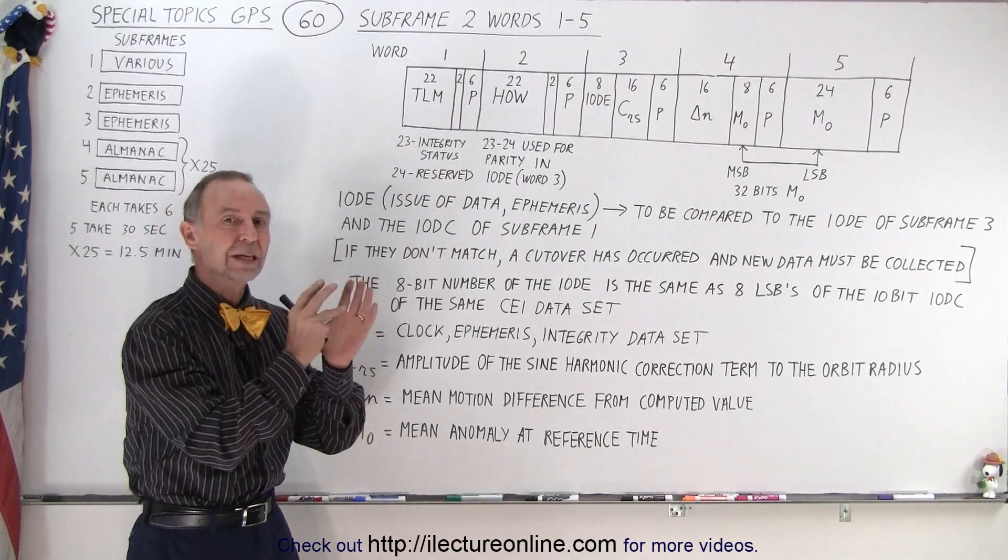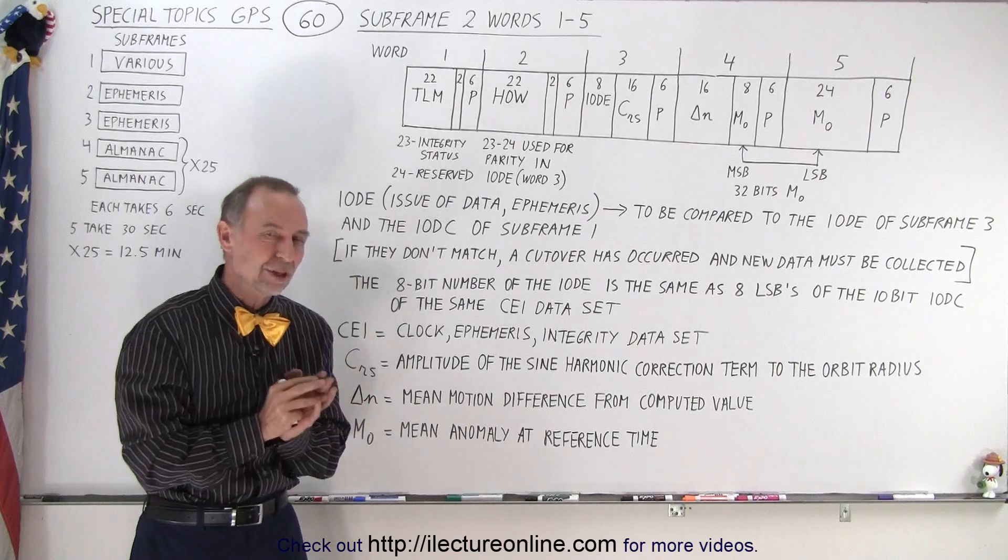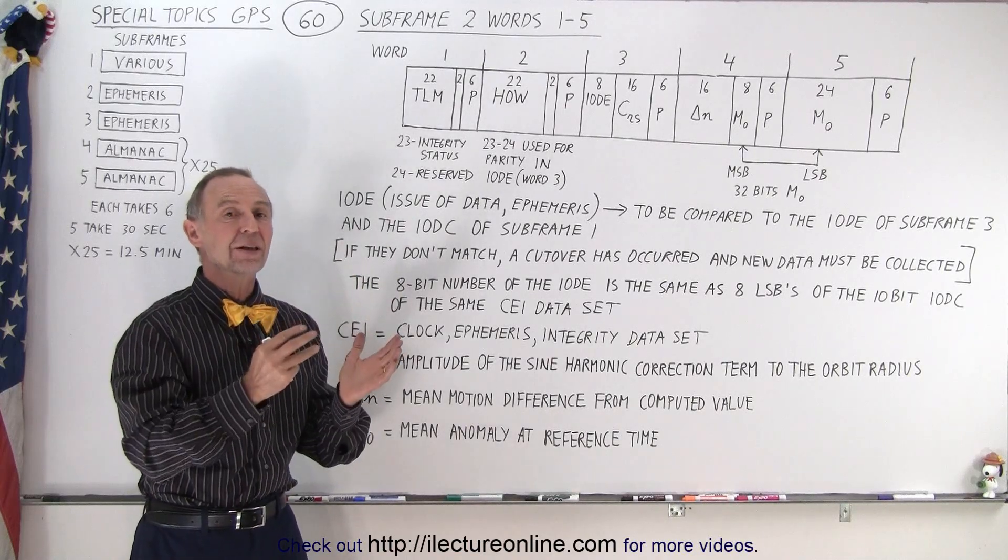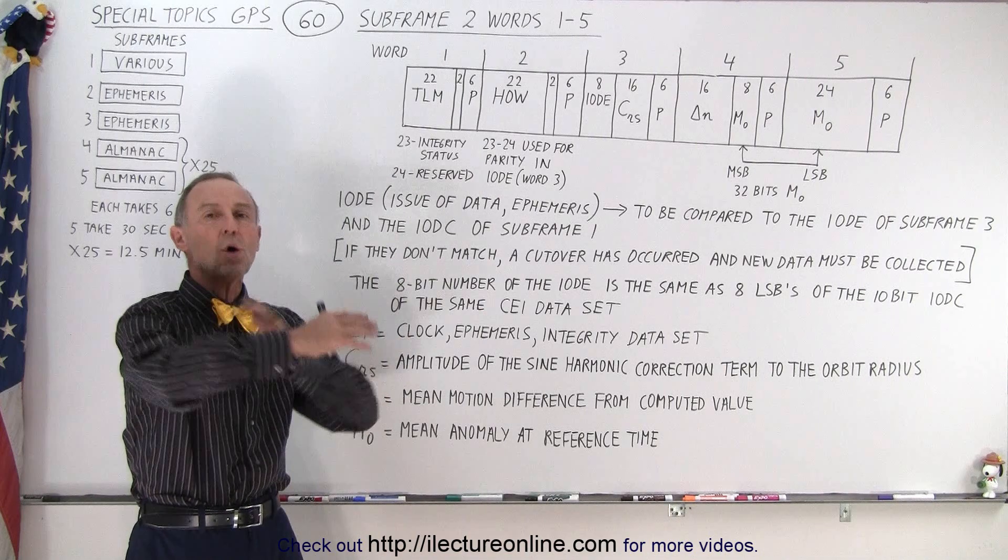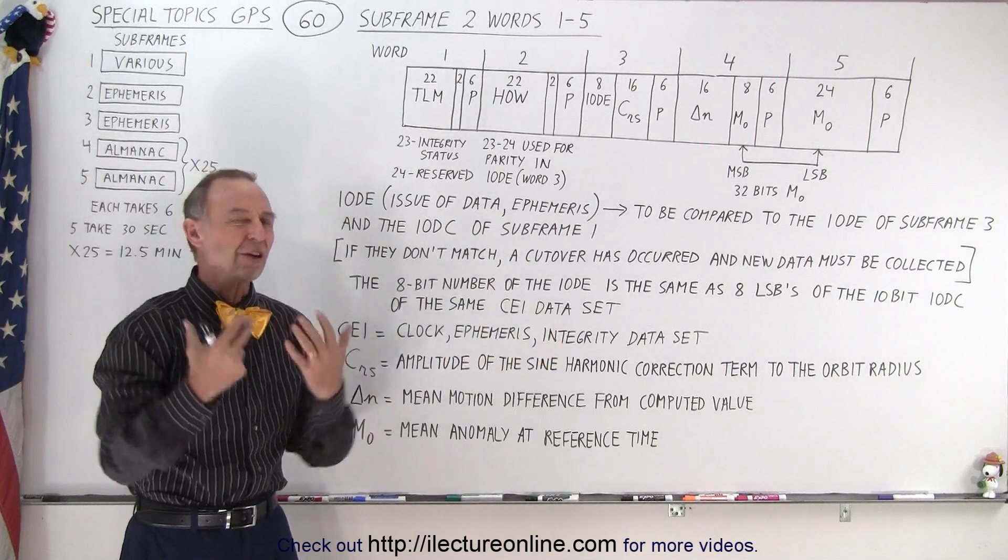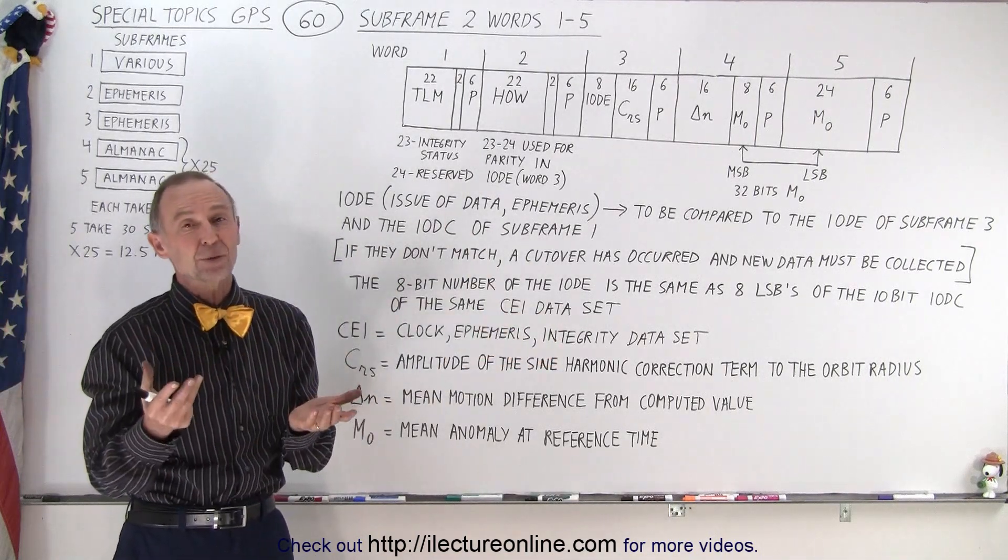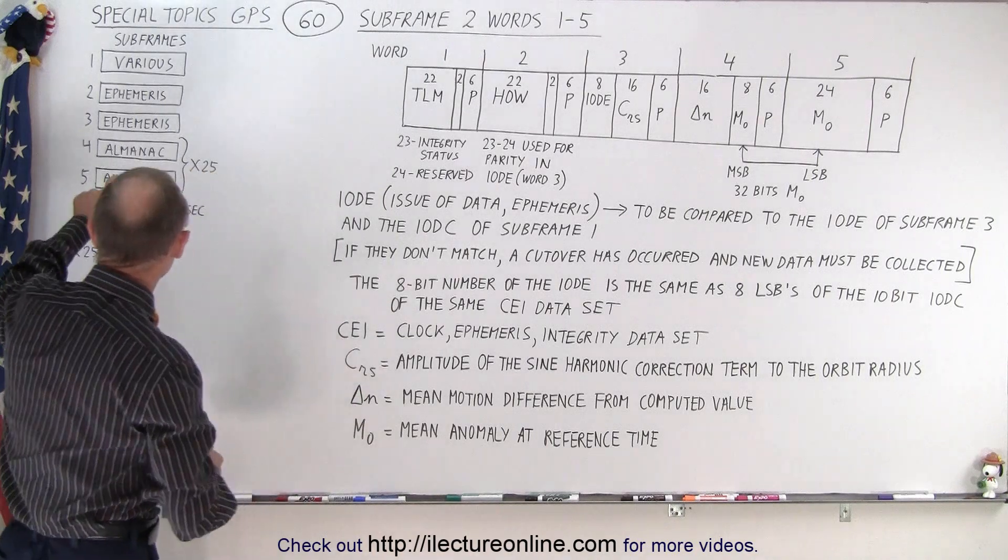Every SV sends its own ephemeris data. Every SV sends all of the data of all SVs in a more generalized, not as accurate format which is called the Almanac.